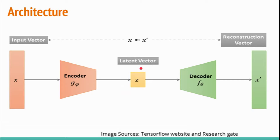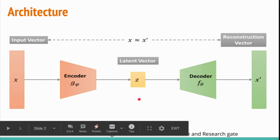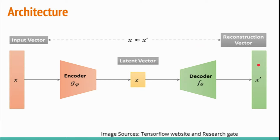The encoder takes input X and converts it into a lower-dimensional space, which can be directly used for dimensionality reduction and fed into your model. If you want to reconstruct the data, that's where the decoder comes in. The decoder takes data from the lower-dimensional latent space and maps it back into a reconstruction space.